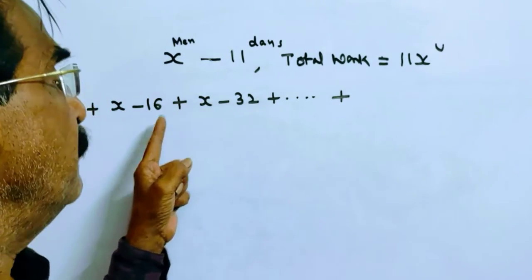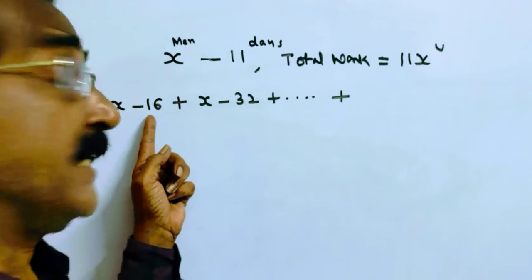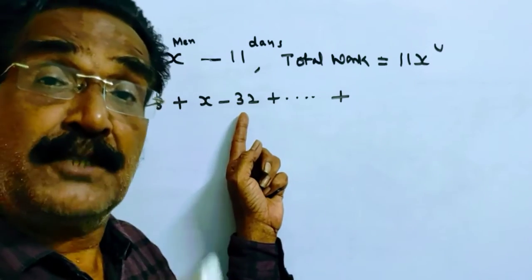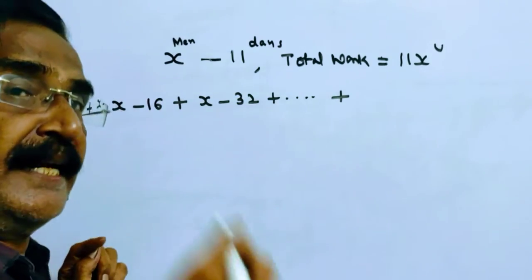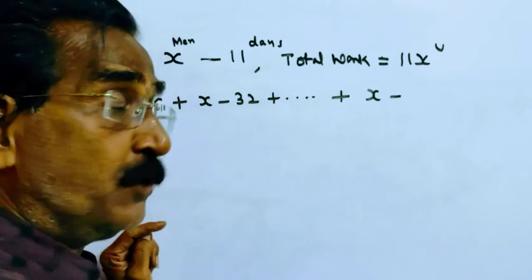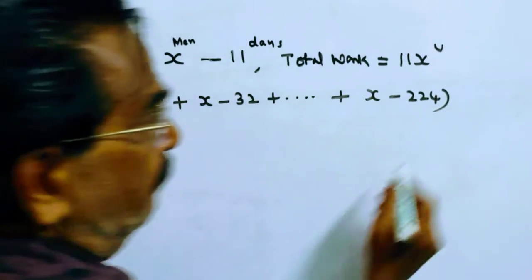First day 16 into 1, second day 16 into 1, third term 16 into 2. So accordingly, the 15th term will be X minus 16 into 14. This is the total work done by them.